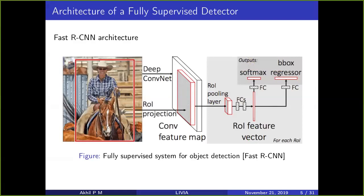In fully supervised methods, we have a feature extraction part from different ROIs — the one shown in red is a proposal. We extract features from the ROI and then process them. The most important part is that after the ROI pooling layers, there is a softmax layer which classifies what object is in the region, and another component which regresses towards the bounding box, which is also given during training time. These are two different objectives in fully supervised algorithms.